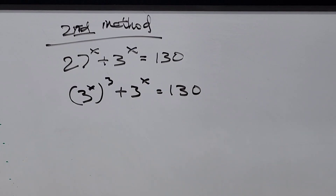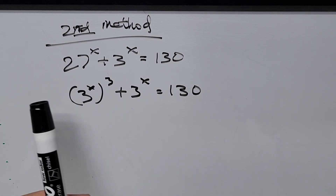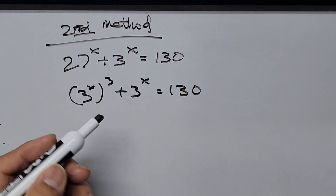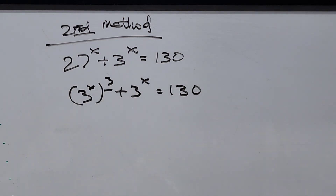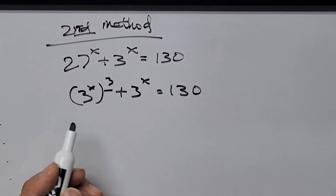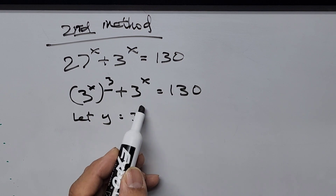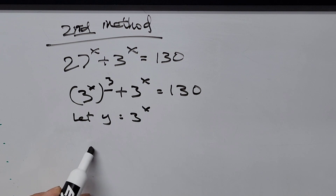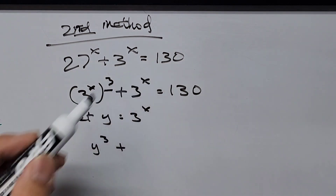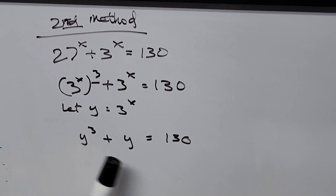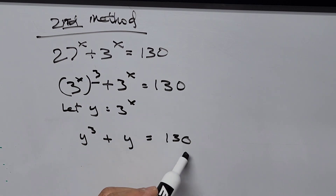Now let's go to the second method. I've written the original equation again, converting the base of 27 into base 3 with its equivalent exponent. From here, we're doing substitution — defining another variable to represent 3 to the power of x. So let y equal 3 to the power of x. The equation is now converted to y cubed plus y equals 130. In this second method, we'll find the value of y by trial and error, plugging in actual numbers to make the sum equal 130.